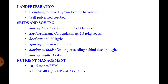Nutrient management: apply 10 to 15 tonnes of FYM per hectare before last harrowing. The recommended dose of fertilizer for this crop is 20 to 40 kg NP per hectare, which will be used as a basal dose at the time of sowing. 20 kg per hectare sulfur is also found beneficial.